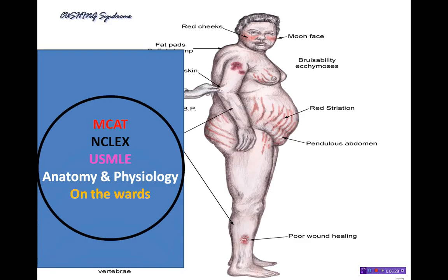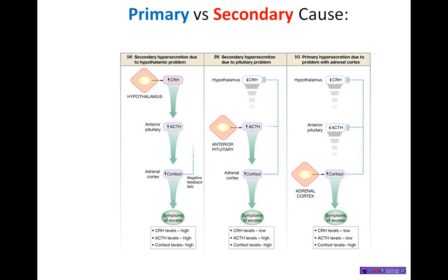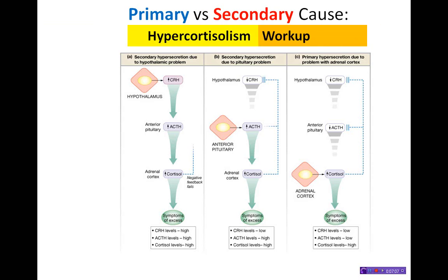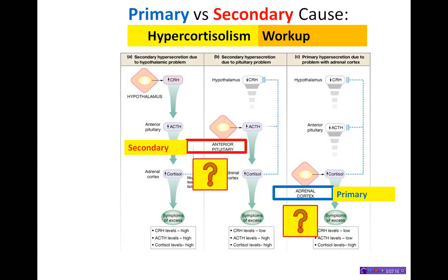For example, you may be in a standardized test, proficiency exam, or on the wards and presented with a patient who obviously has some kind of Cushing syndrome — hypercortisolism — and claims no history of exogenous glucocorticoid ingestion. You'll be doing a workup for primary versus secondary causes, determining whether it's primary at the adrenal cortex, secondary at the anterior pituitary, or secondary at the hypothalamic level. They could also have an ectopic tumor or paraneoplastic syndrome. This requires comprehensive knowledge of the HP area.